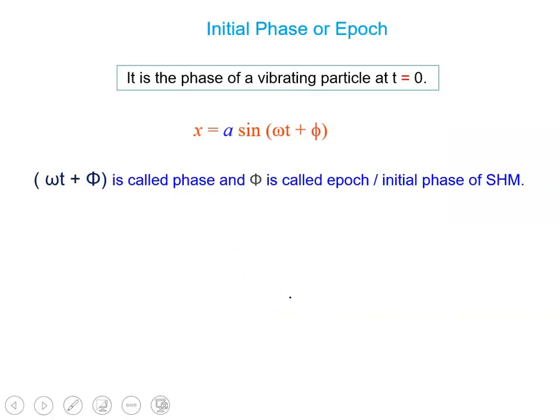So initial phase omega t plus phi, if you put the value 0, you will get phi. This phi is the epoch or initial phase.